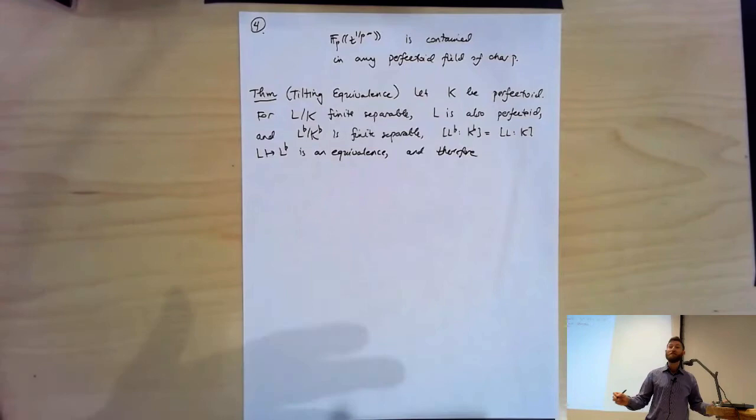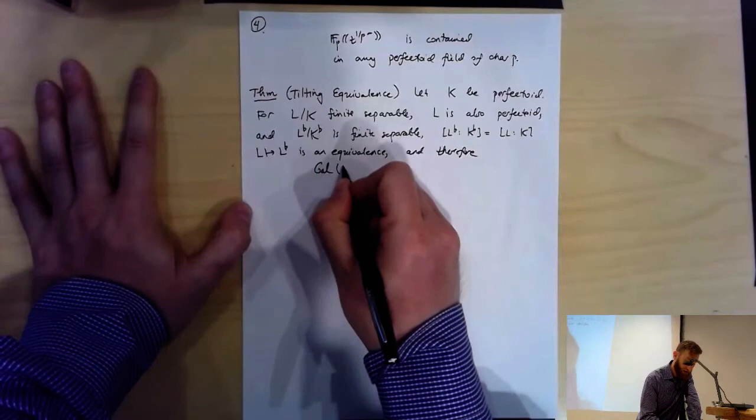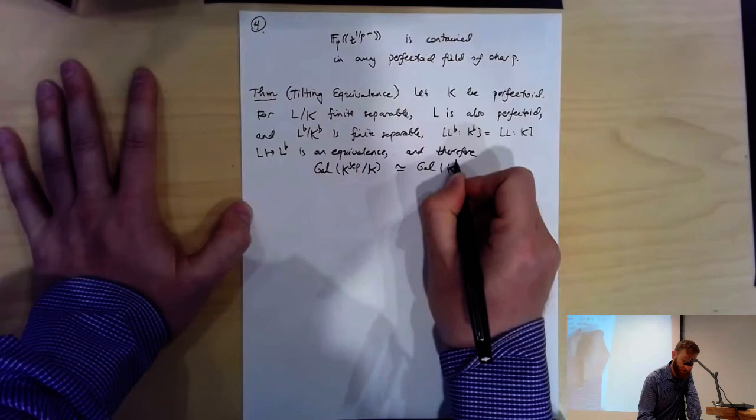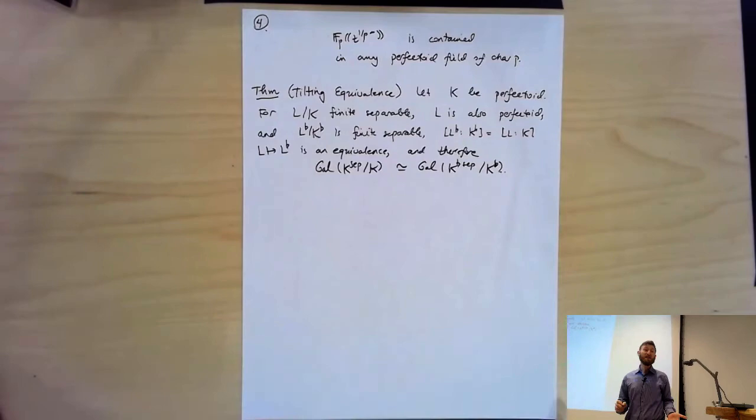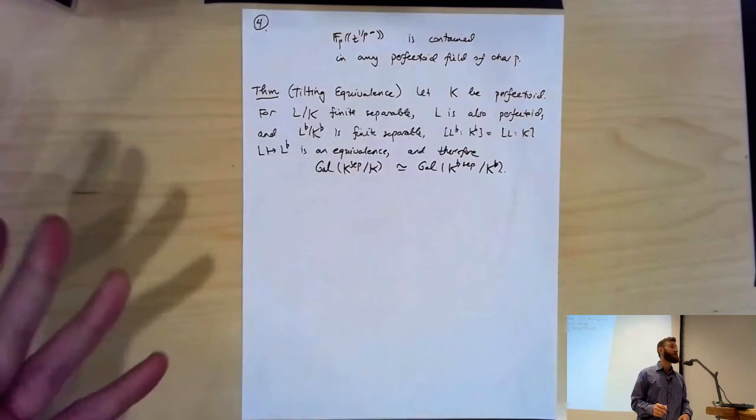Therefore, the Galois theories of K and K-tilt are the same. Finite separable extensions are the same category on either side, and we get that the Galois groups are isomorphic: Gal(K^sep / K) ≅ Gal((K-tilt)^sep / K-tilt). It's a remarkable theorem, and one that underpins a lot of what's done in p-adic Hodge theory. In particular, the theory of phi-gamma modules couldn't get off the ground without a theorem like this.